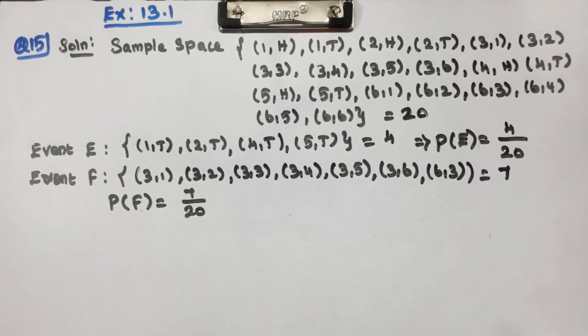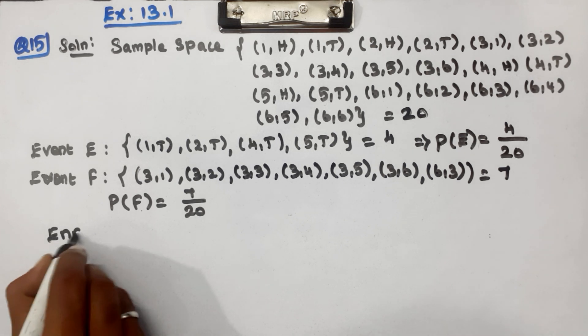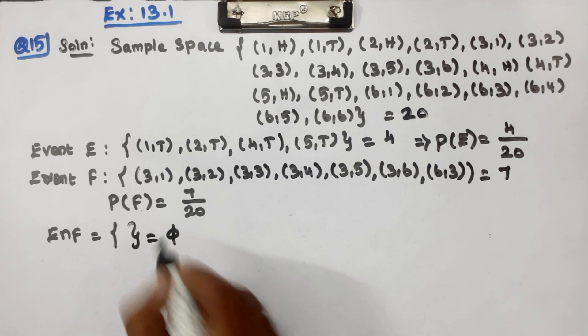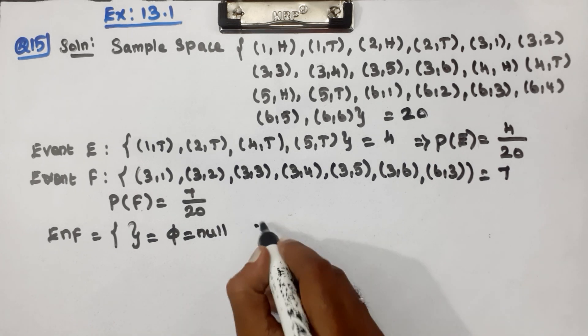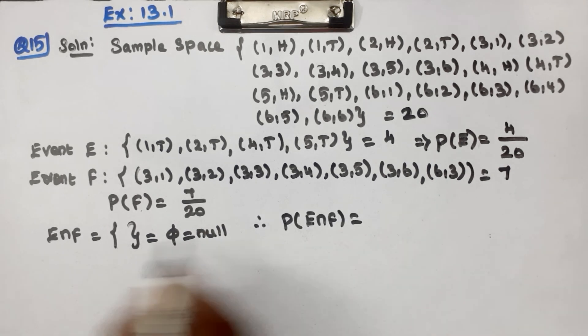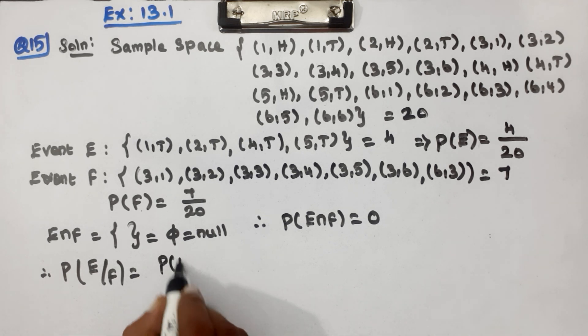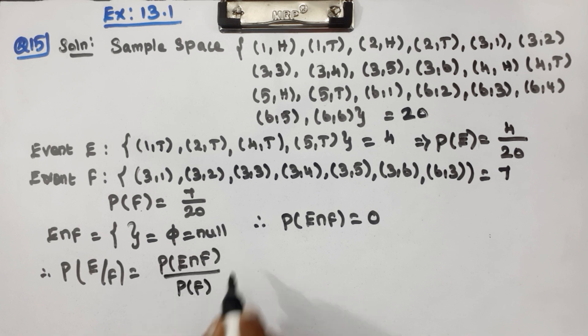Now E intersection F - these two have no common outcomes, it's a null set. Therefore probability of E intersection F is 0. The conditional probability of E given F equals probability of E intersection F divided by probability of F.